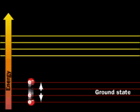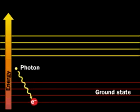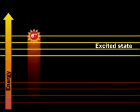An atom or molecule in its ground state is at its lowest group of energy levels. Absorption of a photon puts the molecule in an excited state, another group of higher energy levels.